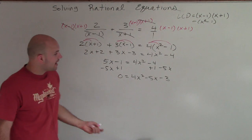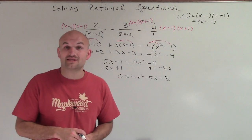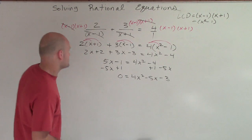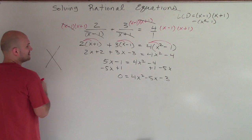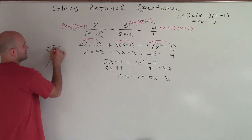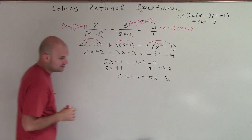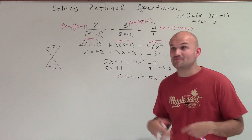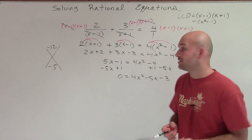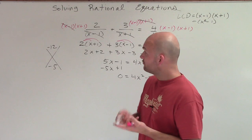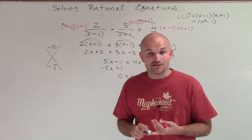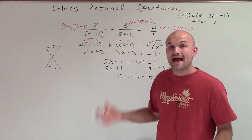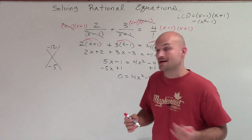Now I need to determine: is this factorable, or do I need to use completing the square or the quadratic formula? I can use the AC method: 4 times 3 is negative 12, and the middle coefficient is negative 5. I need two numbers that multiply to give me negative 12 but add to give me negative 5. The factors of 12 are 4 and 3, 6 and 2, and 12 and 1 — none of those combinations add to negative 5. So it's not factorable.